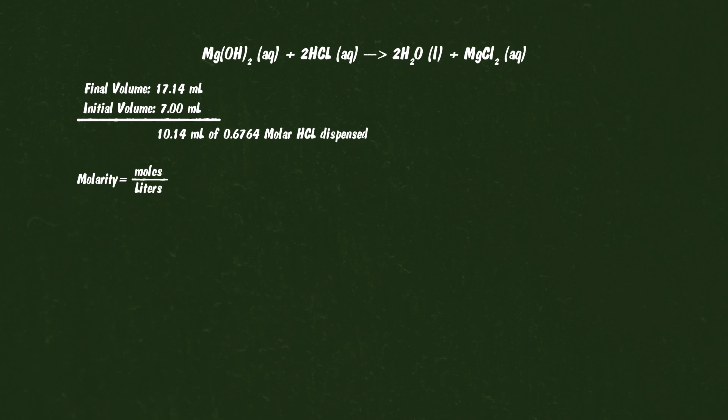Remember, molarity equals moles divided by liters. Now solve the equation for x. We can see that 0.006859 moles of hydrochloric acid reacted with the magnesium hydroxide.